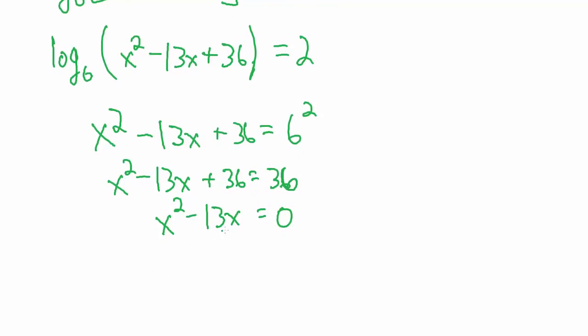So here x squared minus 13x equals 0. What we can do now is factor out an x. So we get x times the quantity x minus 13 equals 0, and then that tells us that x equals 0 or x minus 13 equals 0 which means x equals 13.